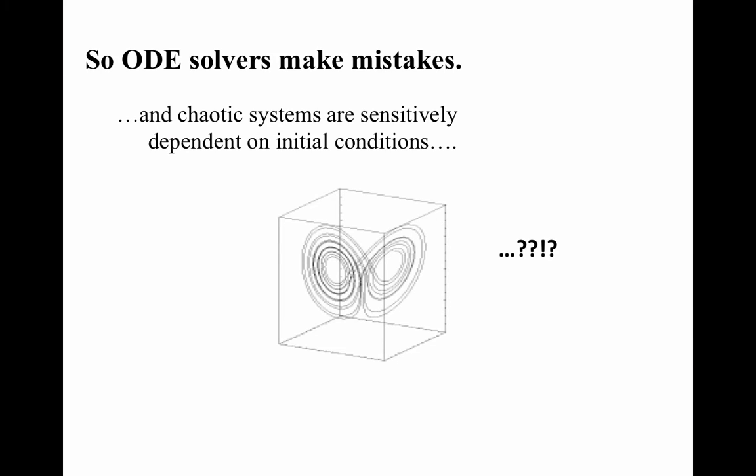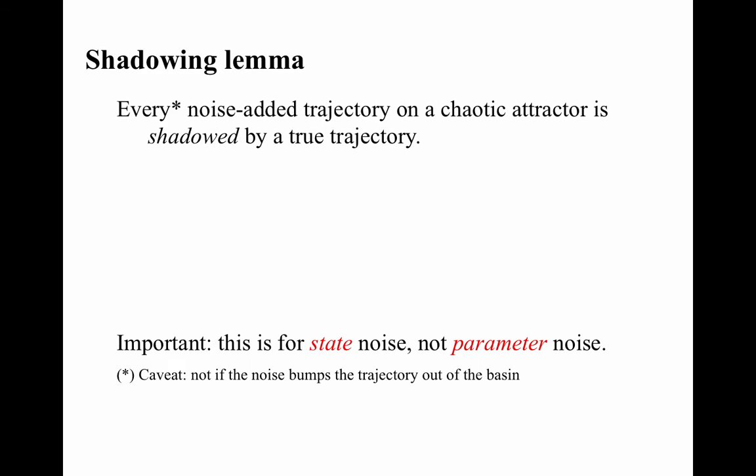There's a very important result about this. It's called the shadowing lemma. And this is what it says: if you add noise to a trajectory on a chaotic attractor, you'll land on something called a shadow trajectory. In other words, noise bounces you onto an attractor thread that you'd have gotten to eventually anyway, in forward time or in backward time.